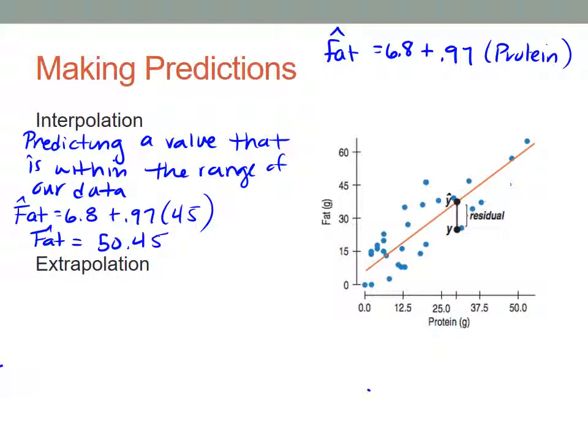Just make sure you remember that is a predicted fat value. You're predicting that at 45 grams of protein there will be 50.45 grams of fat.